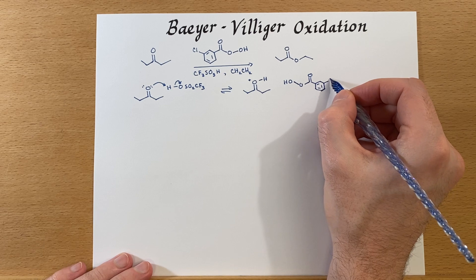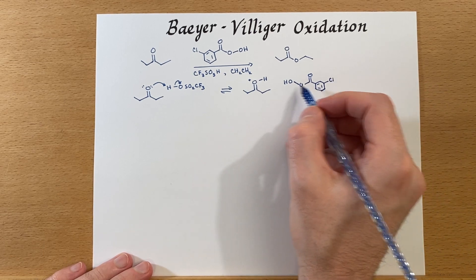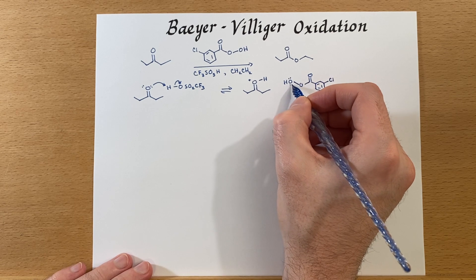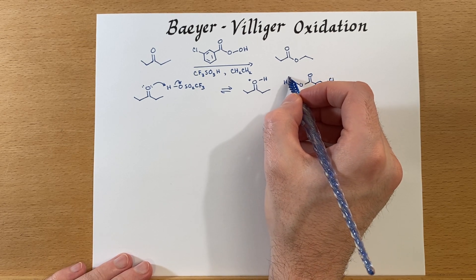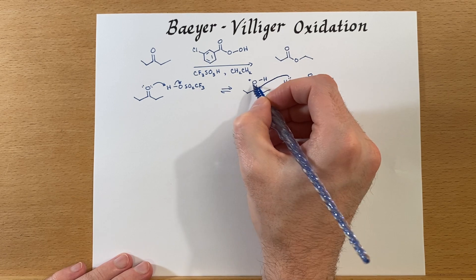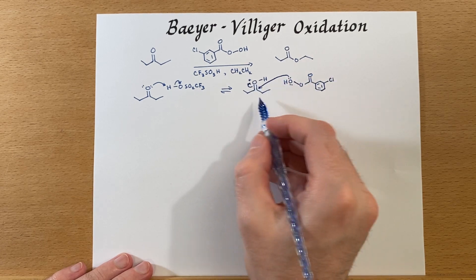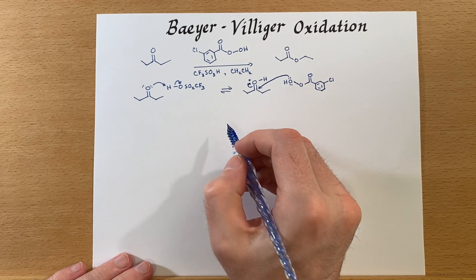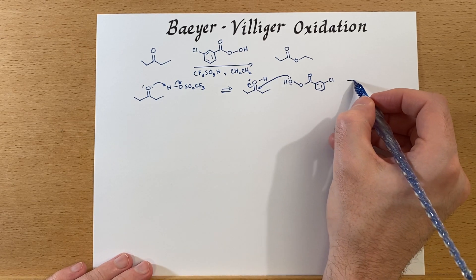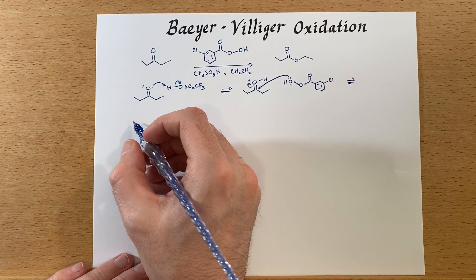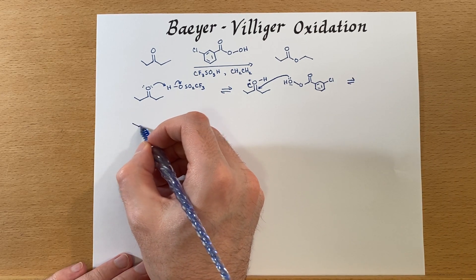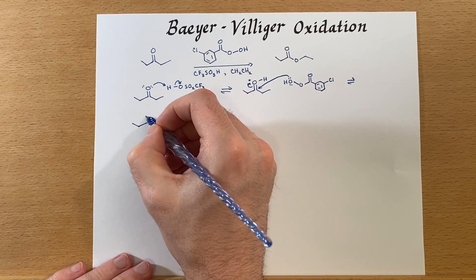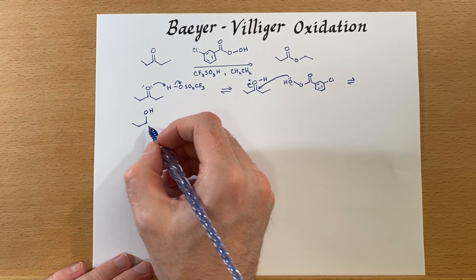Now we need to bring in our peroxy acid. Part of what's going to make drawing this mechanism a little longer is just drawing out the MCPBA — it's a little larger than some of our other reagents. So we'll have the alcohol part attack that carbonyl carbon, and then the electrons have moved up, so this is now an alcohol.